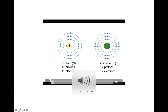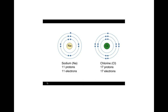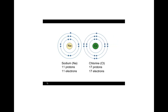Sometimes atoms complete their outer shells by stealing or giving away electrons — this happens between sodium and chlorine atoms. An electron moves from the sodium atom to the chlorine atom, and the outer shells of both atoms are now complete, containing eight electrons. The chlorine atom now has 18 electrons but only 17 protons — because an electron has a negative charge, the chlorine atom now has a net negative charge. Such a charged atom or molecule is called an ion — in this case, a negative ion. The sodium atom has lost an electron, leaving it with an extra proton, giving it a positive charge. Ions with opposite charges are attracted to each other, forming an ionic bond, and these ions combine to form sodium chloride — ordinary table salt.